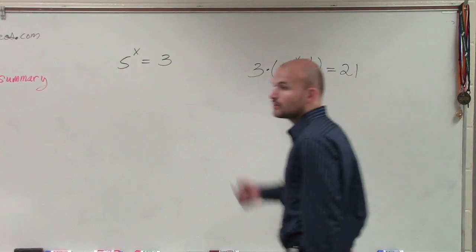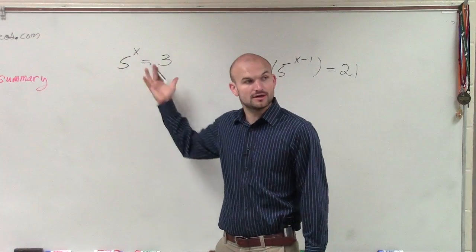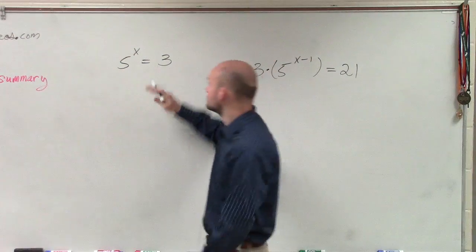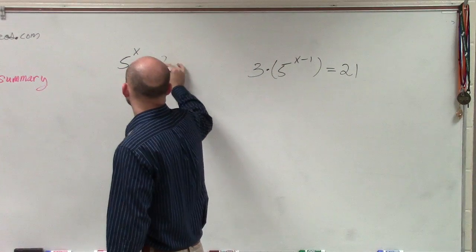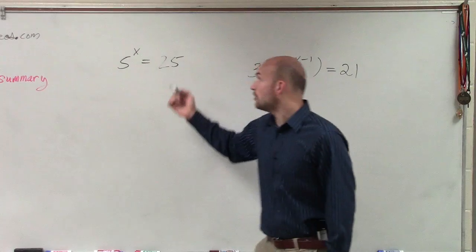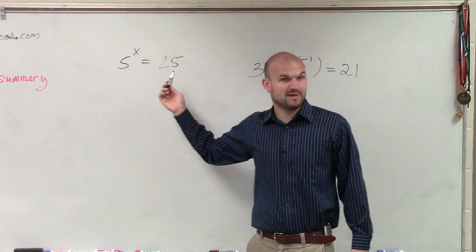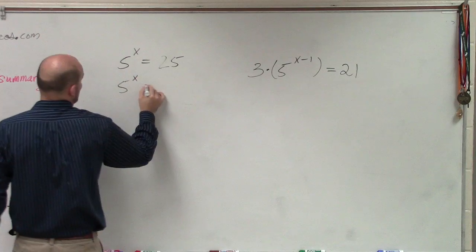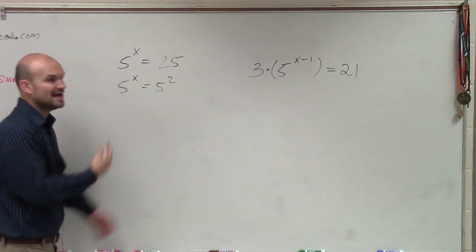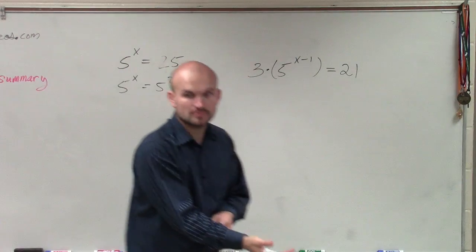What we talked about is we could use our one-to-one property and take the log of both sides. Now, first of all, actually, hold on. If we had it like this, we could say, well, now you can convert these to the same base, right? So we could say 5^x equals 5 squared. Then you could say x equals 2.